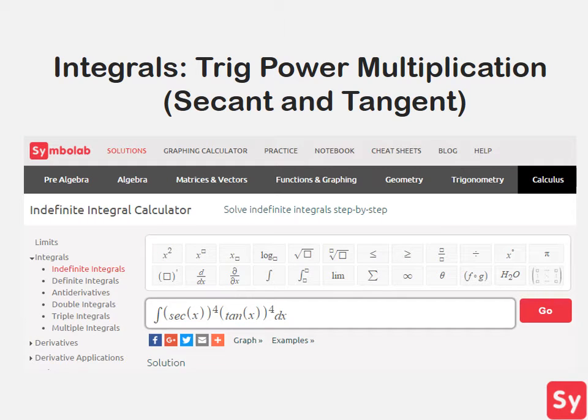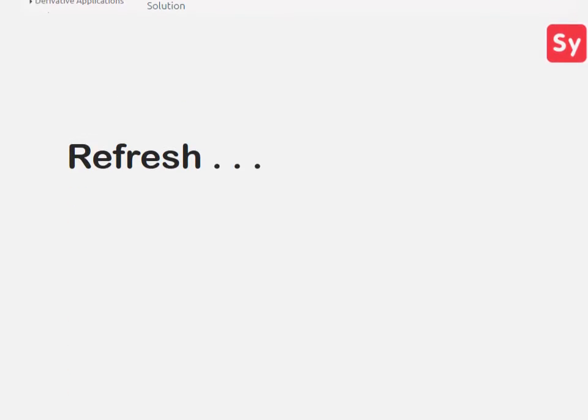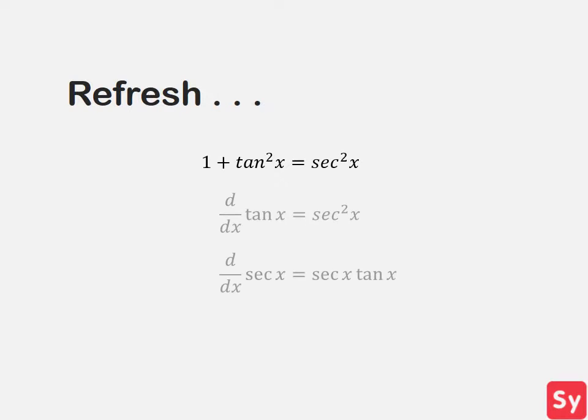Last video we learned about how to solve integrals with trig powers of sine and cosine. This video we will learn how to solve them when they are in terms of secant and tangent. Before we start, it is important to review this trig identity and these two trig derivatives. They will be very helpful when learning how to solve these integrals.